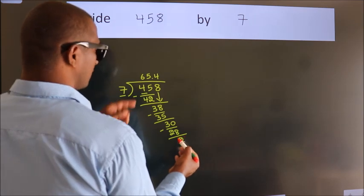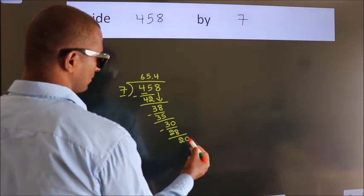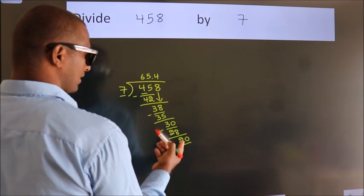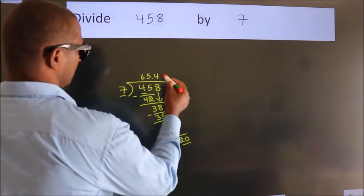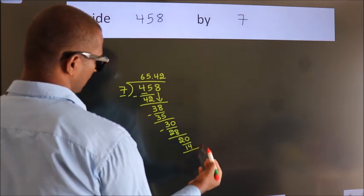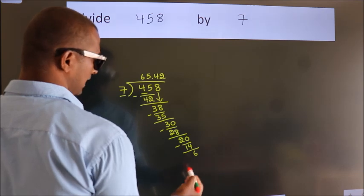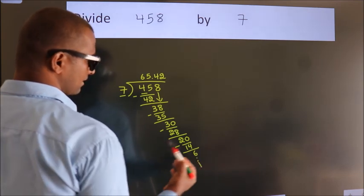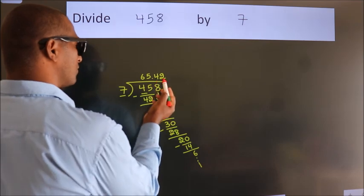After this, we already have the decimal, so directly take 0. So, 20. A number close to 20 in the 7 table is 7×2=14. Now we subtract. We get 6. And you continue the division. It is enough if we do up to 2 decimal places.